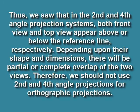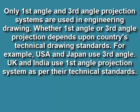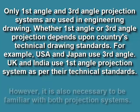Thus, in the second and fourth angle projection systems, both front view and top view appear above or below the reference line respectively. Depending upon their shape and dimensions, there will be partial or complete overlap of the two views. Therefore, we should not use second or fourth angle projection systems. Only first angle and third angle projection systems are used in engineering drawing. Whether first angle or third angle depends upon a country's technical drawing standards — for example, USA and Japan use third angle projection, while UK and India use first angle projection.